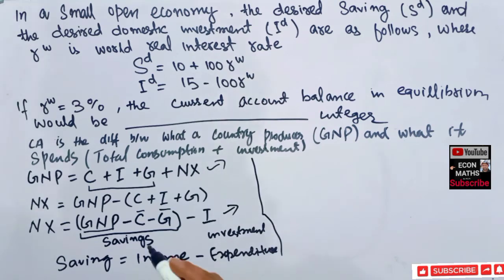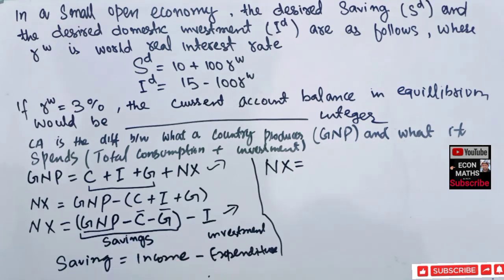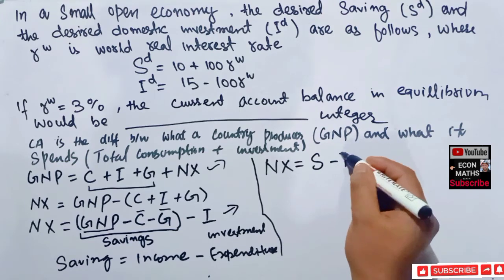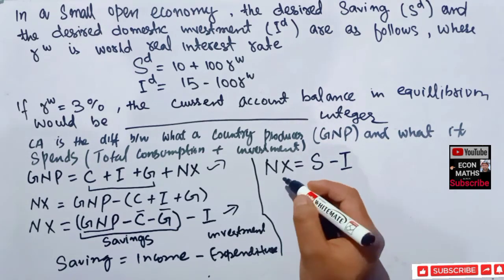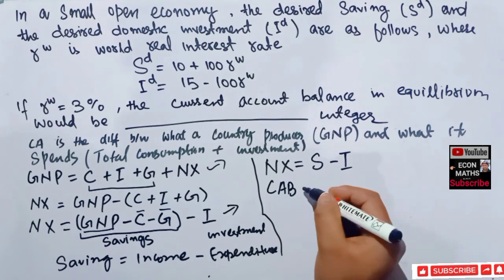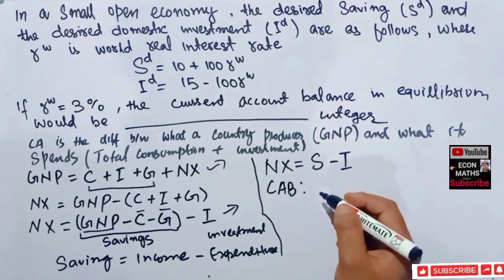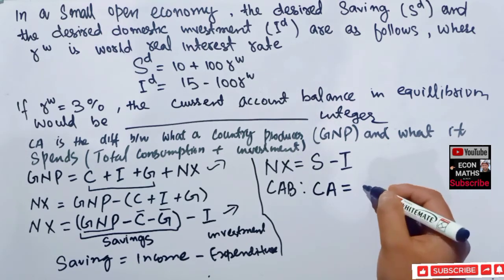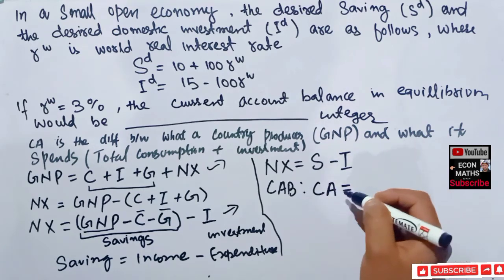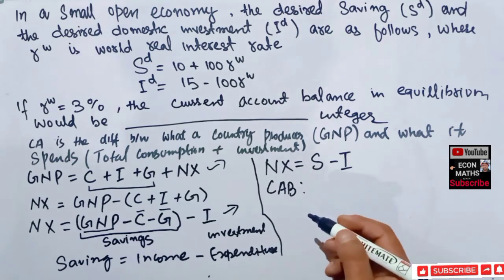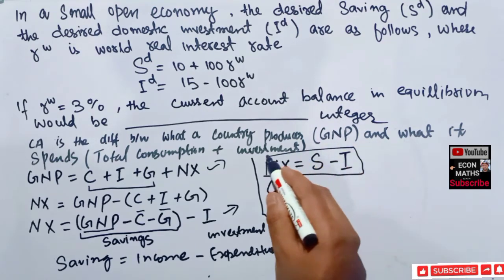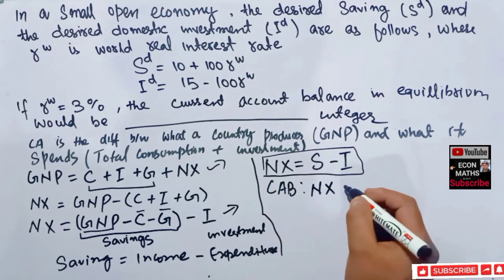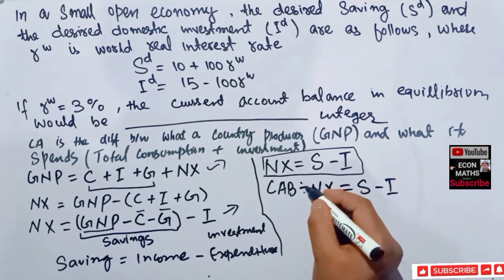So we get the relationship: NX equals S minus I. That means the current account balance CA equals NX, which equals savings minus investment. So the current account balance is simply savings minus investment.